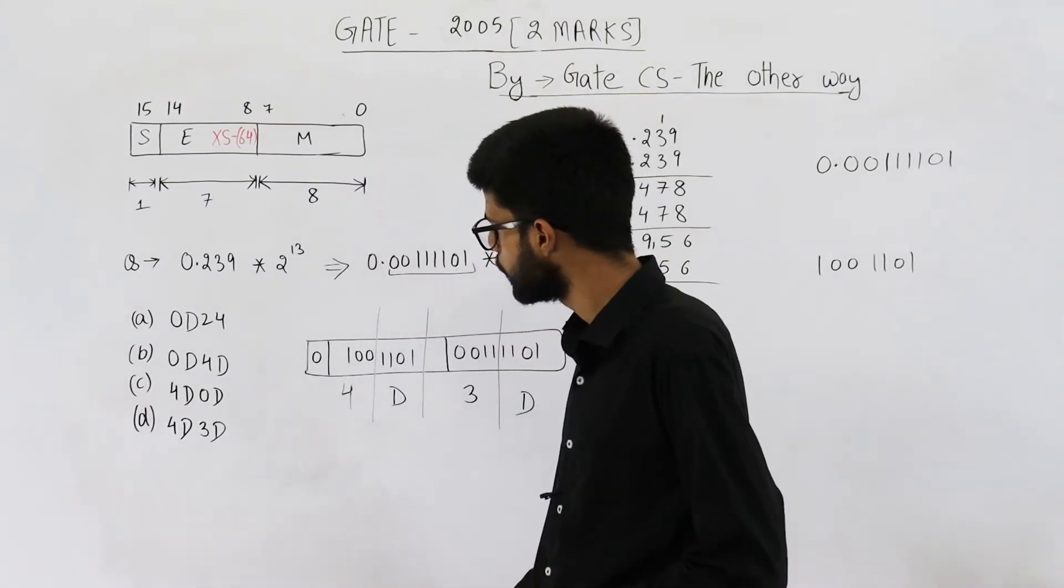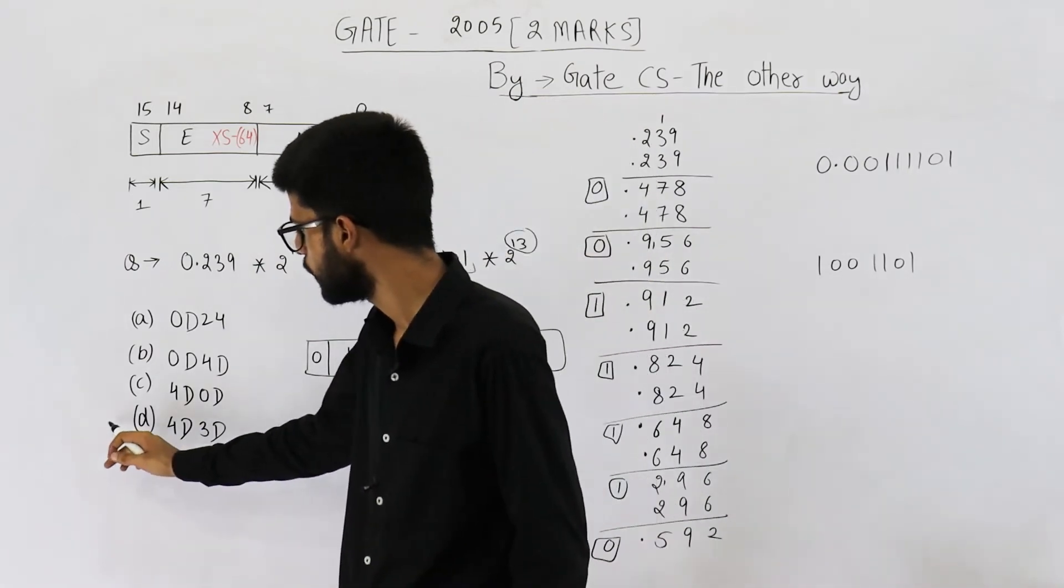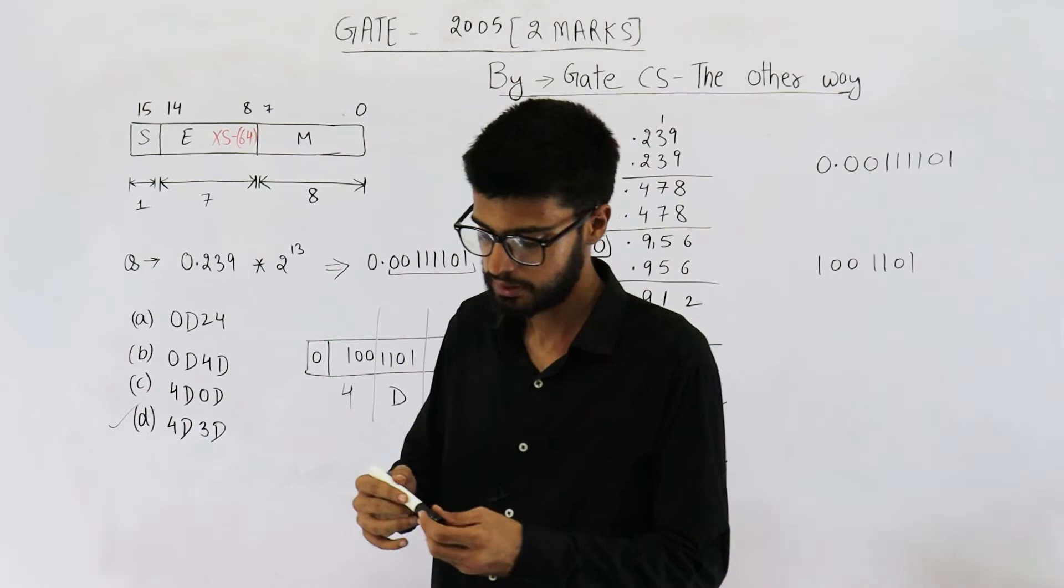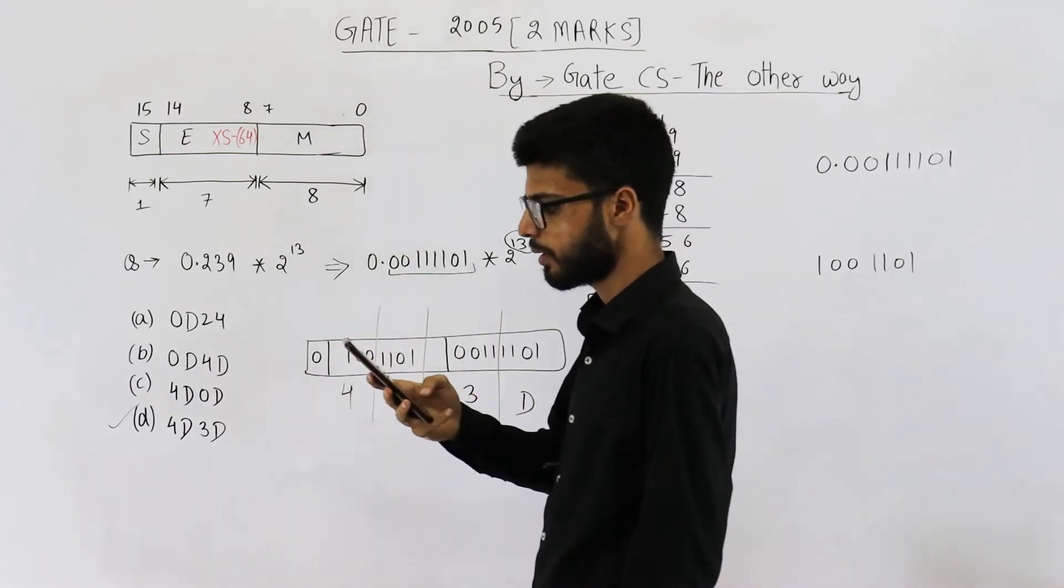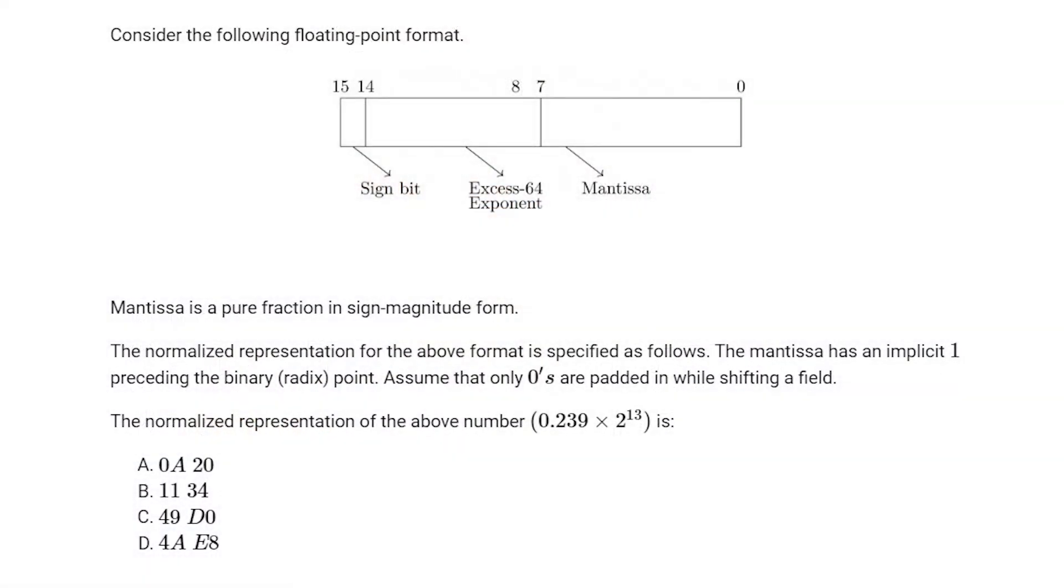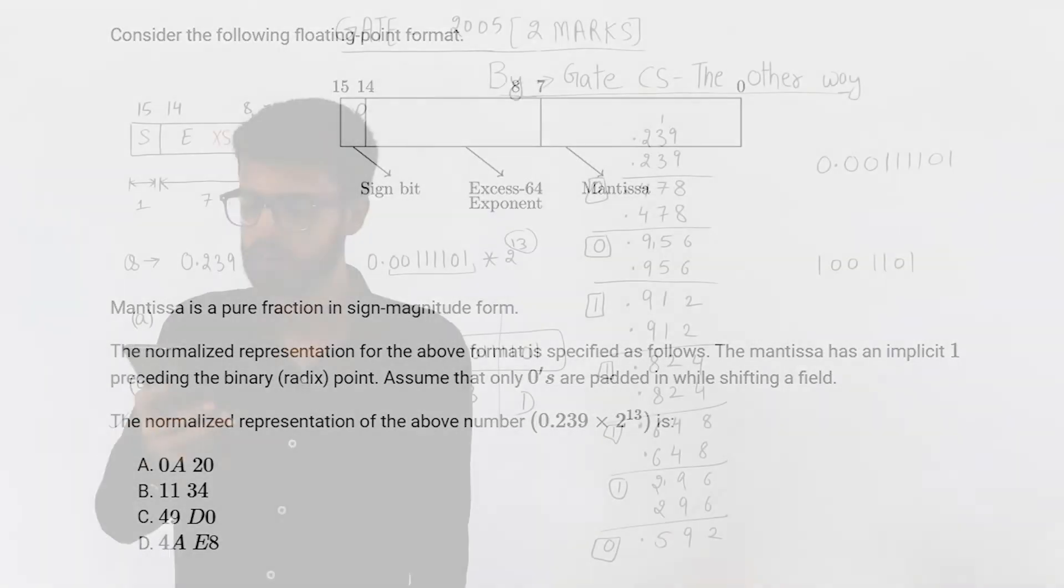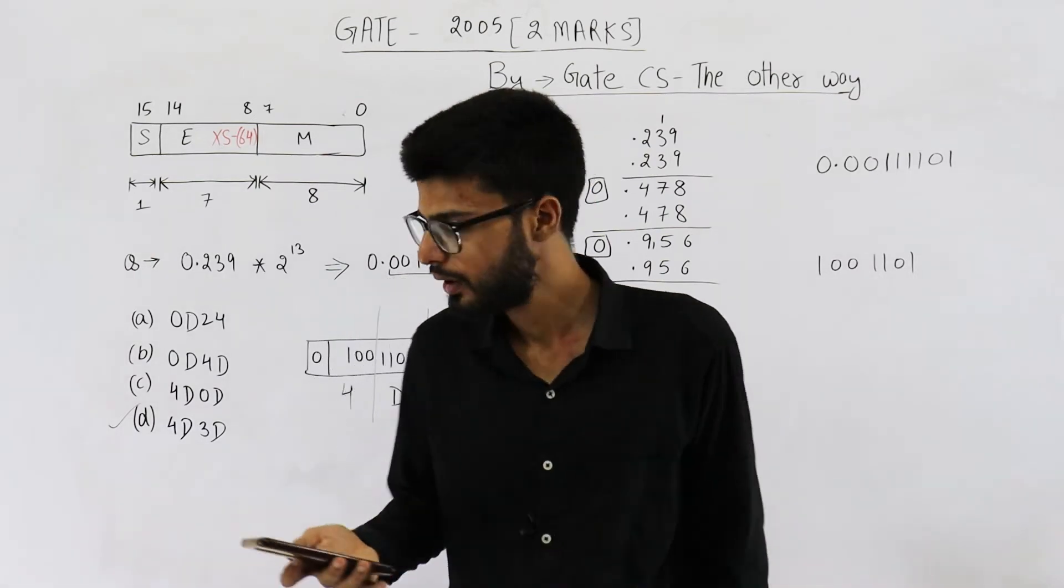Let us see if it's present in the options. I have noted down the options. So yeah, option D is 4D3D. So answer is option D. Now I will just read the second part. Second part of this question says, mantissa is pure fraction in sign magnitude form, the normalized representation of above format is specified as follows. The mantissa has an implicit one preceding the binary or radix point. Assume that only zeros are padded while shifting a field. The normalized representation of above number that is 0.239 × 2^13 is.